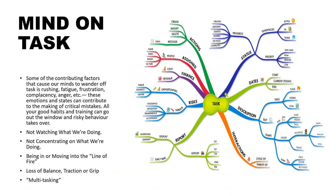Contributing factors that cause our minds to wander include rushing, fatigue, frustration, complacency, anger, and other emotions. These states can contribute to critical mistakes — all your good habits and training can go out the window and risky behavior takes over. This leads to not watching or concentrating on what we're doing, being in or moving into the line of fire, loss of balance, traction, or grip. There is no such thing as multitasking — you can do one thing at a time, or a series of things at different intervals, but not all at once.